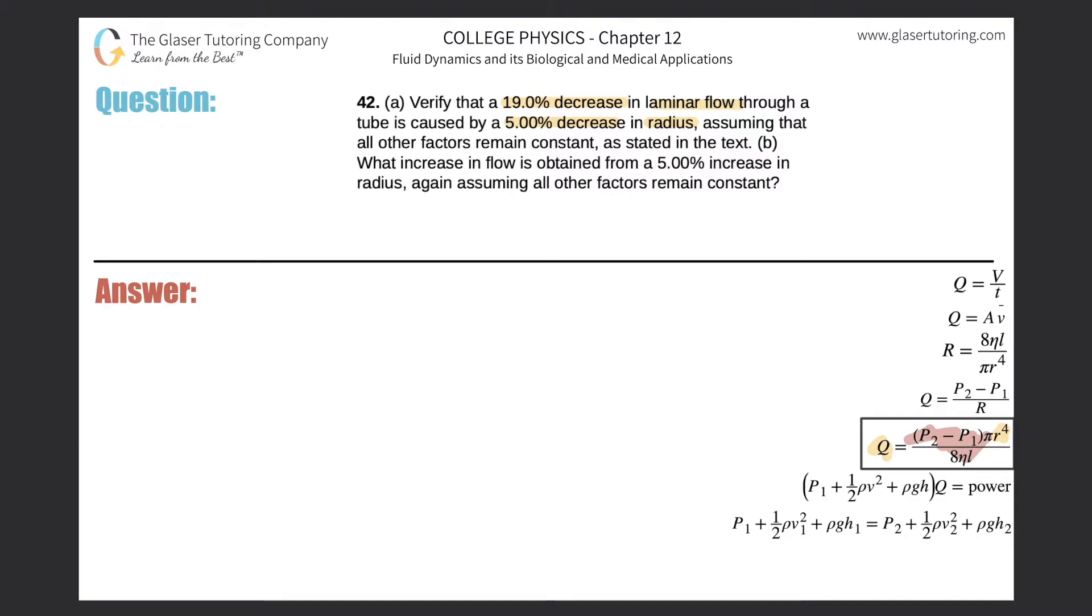So I'm going to write Q original will equal the radius original raised to the fourth power. Since I'm creating a ratio, there's a whole bunch of other factors that I need to state, but since I'm creating a ratio, I'm going to now put the new flow rate will be equal to the new radius raised to the fourth, and now this proportion is true.